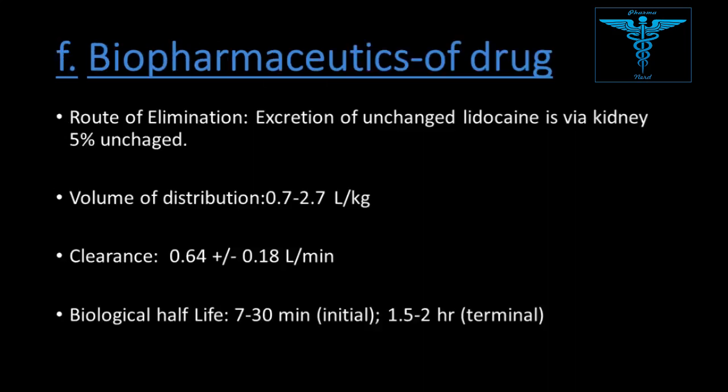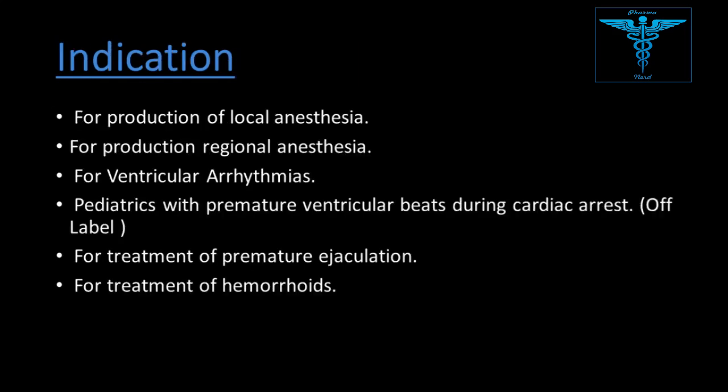Excretion is primarily via the urine. Renal excretion of unchanged lidocaine is approximately 5%. Volume of distribution: 0.7 to 2.7 liters per kg. Clearance: 0.64 liters per minute ± 0.18. Biological half-life: 70 to 30 minutes initial phase and 1.5 to 2 hours terminal phase.